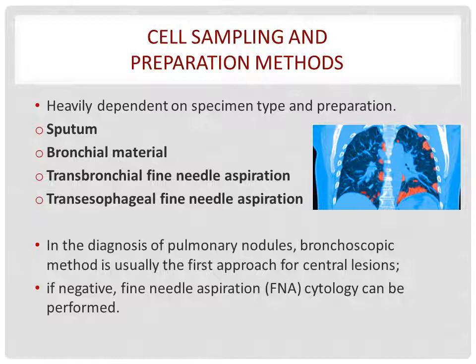Let's begin. The respiratory tract cytology is heavily dependent on specimen type and separation, which includes vestibulum, bronchial material, transbronchial fine needle aspirations, and transesophageal fine needle aspirations. In the diagnosis of pulmonary disease, cytologically, bronchoscopic approach is usually the first approach to disease. But if it yields near-disease results, fine needle aspiration can be performed next.